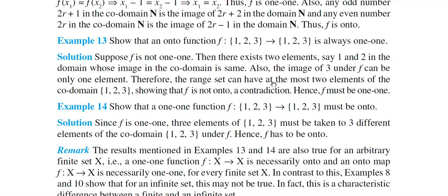Therefore the range set can have at most two elements of the co-domain. That means one element of {1,2,3} in the co-domain remains unrelated, making the function into (not onto) — which contradicts our given assumption that f is onto. Hence f must be one-one.